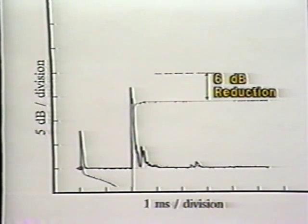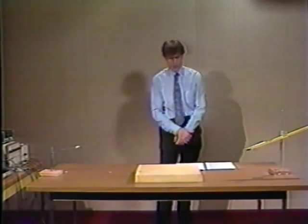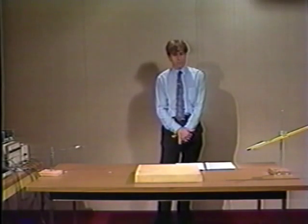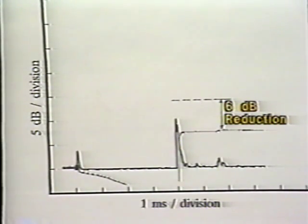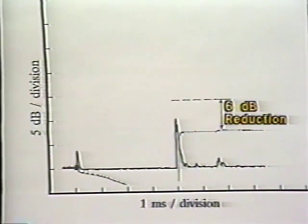Now I'll pick up the microphone and move it again. The distance from the source to the microphone has been doubled again to 4.52 feet. Notice that the pulse begins to rise at four milliseconds after the trigger now. The integrated energy level shown by the horizontal line has decreased six more decibels and the pulse is also visually smaller than in the previous example. The basic principle of free field sound decay is that as one doubles the distance from the sound source, the sound level decreases by six decibels, due to the increasing area that the sound wave is spreading over.